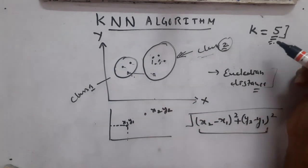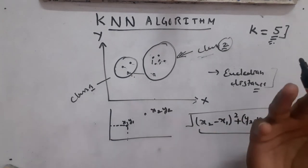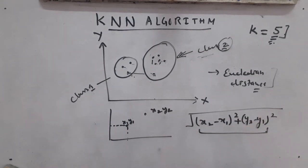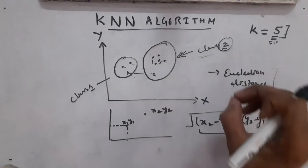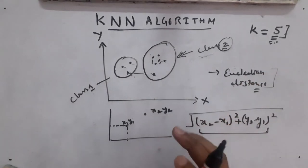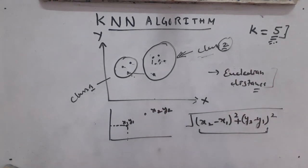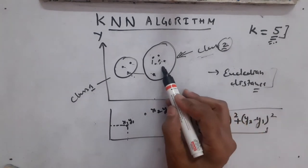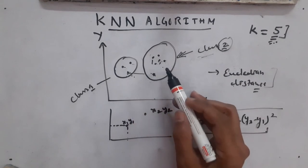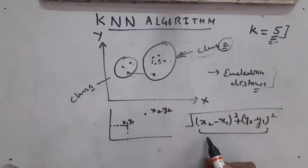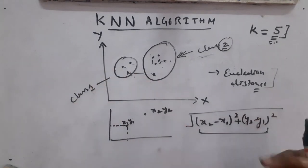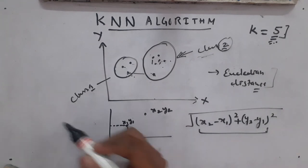Then we pick the nearest data points according to k. If k is 5, we pick the five nearest; if k is 3, we pick the three nearest. Whatever the value of k, we pick that many nearest data points to the new point we want to classify. Then out of those, we see which class they belong to — for example, if four out of five belong to Class 2 and one to Class 1, the new data point is assigned to Class 2.